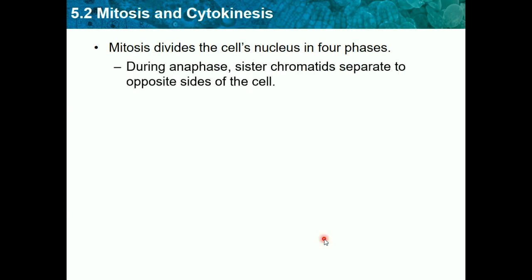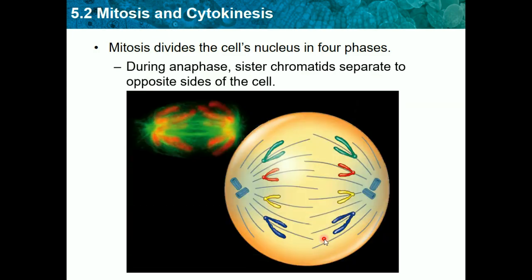During anaphase — the A in PMAT — sister chromatids are separated to opposite sides of the cell. A way to remember this: 'anna' starts with A, for 'apart' — anaphase pulls things apart to opposite sides. As we see in the image, the chromatids got split up from the centromere, so each sister chromatid is on an opposite side and being pulled to each side of the cell.